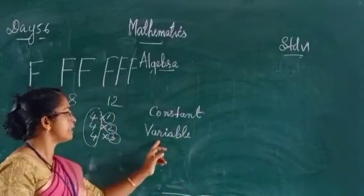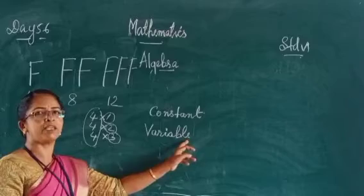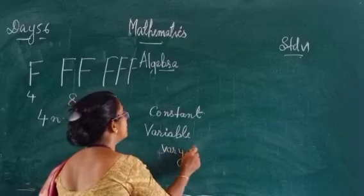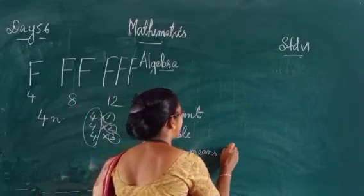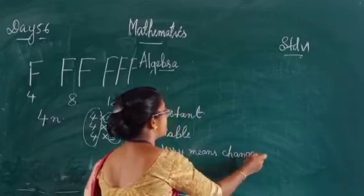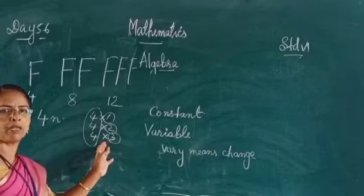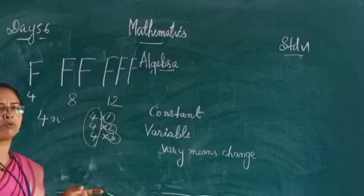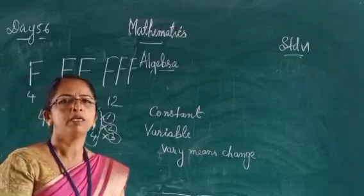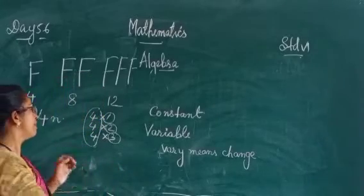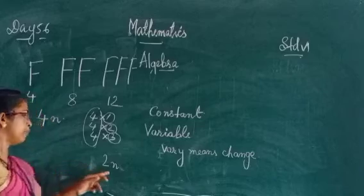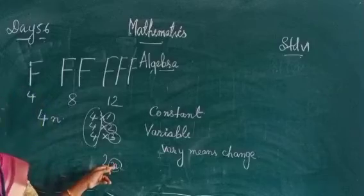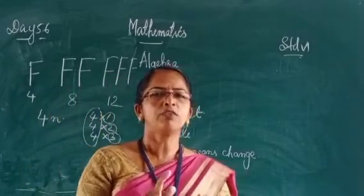A variable means something that can vary — vary means change. Something that can change. So here, the number of letters is the variable. We can use an English letter to represent this variable, and express the number of matchsticks in a simpler function using that variable. The multiplier is a constant while the variable changes.